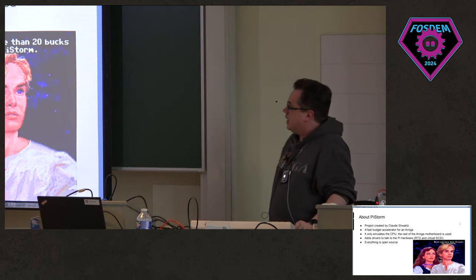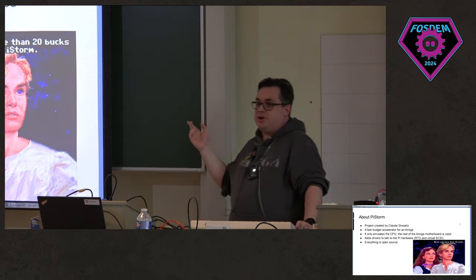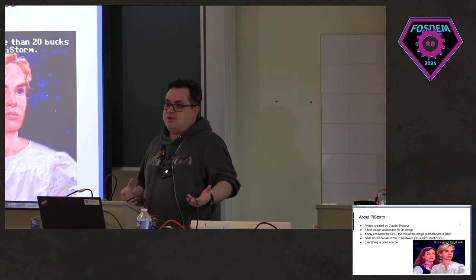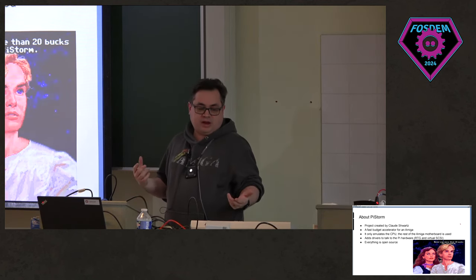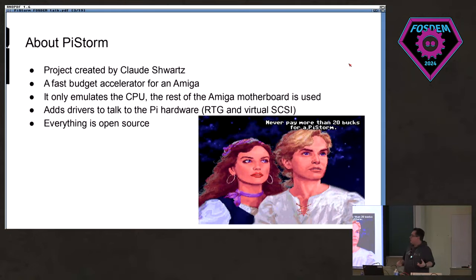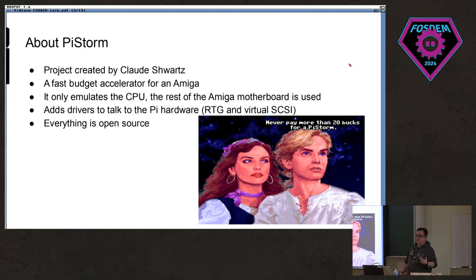So about PiStorm: it was a project created by a guy called Claude Schwartz. If you've ever tried to use or upgrade a Commodore Amiga today, you need a processor like a 68030 or a 68060. And if you want a 68060 with a board and RAM and everything, you need to sell a kidney — they are really rare and really expensive nowadays. So the idea was to create a very fast, budget accelerator.